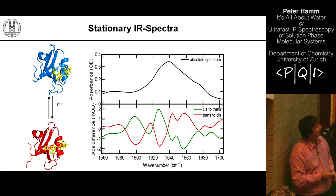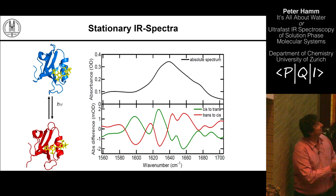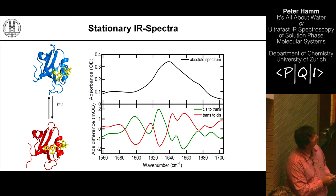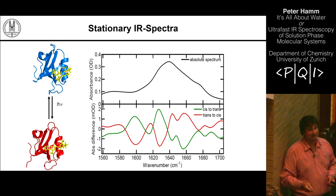We use infrared spectroscopy to distinguish the two states: cis and trans. We look at the amide-I band, which is the C=O vibration of the peptide backbone. The changes in the spectrum are very small, but there are tiny differences, and the difference spectra (cis minus trans and trans minus cis) are mirror images of each other — showing that the conformational switching is reversible. We can do this back-and-forth switching hundreds to thousands of times; it is absolutely reversible and stable.